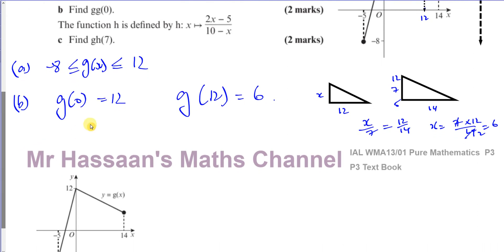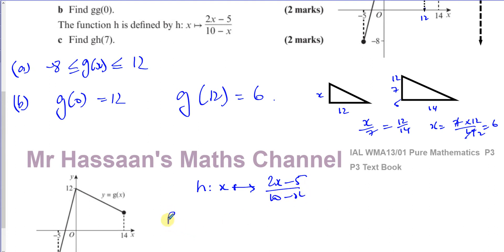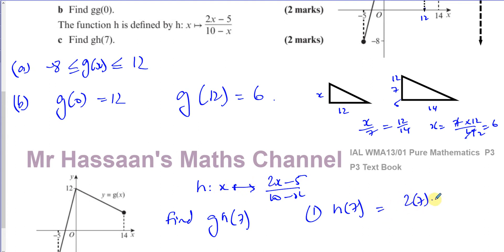Part (c): the function h is defined by h(x) = (2x - 5)/(10 - x). Find g(h(7)). First compute h(7): substitute x = 7 to get (2×7 - 5)/(10 - 7) = (14 - 5)/3 = 9/3 = 3. So h(7) = 3.